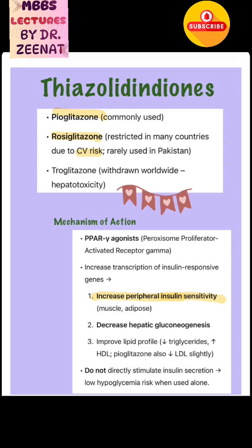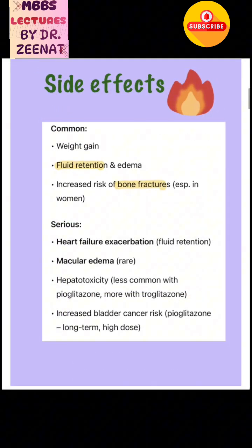What is the mechanism of action of these drugs? They are PPAR-gamma agonists. They increase peripheral insulin sensitivity and decrease hepatic gluconeogenesis, and improve lipid profile — decreasing triglycerides, increasing HDL, and pioglitazone also causes lowering of LDL. They do not directly stimulate insulin secretion, but they increase insulin sensitivity.